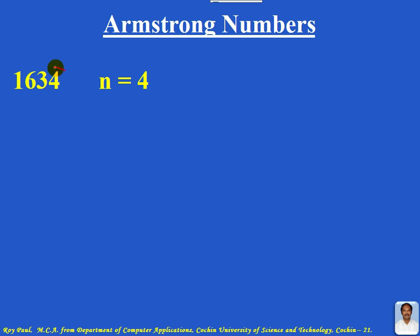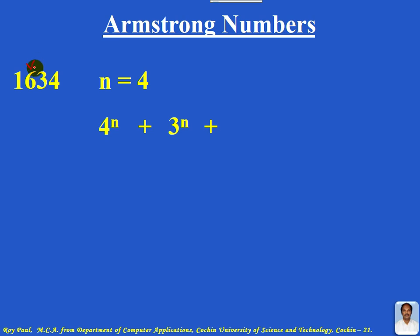Take the digit in the units place, 4, and find the nth power of 4, that is 4 raise to n. Plus take the digit in the tens place, that is 3, and find the nth power of 3, that is 3 raise to n. Plus take the digit in the hundreds place, 6, find the nth power of 6, that is 6 raise to n. Plus take the digit in the thousands place, 1, and find the nth power of 1, that is 1 raise to n.